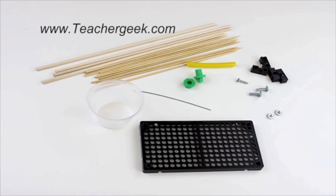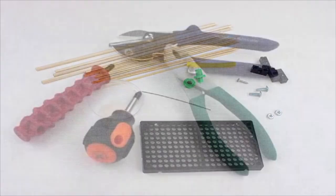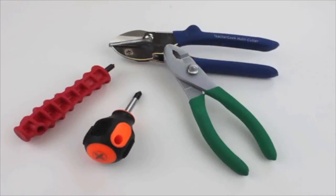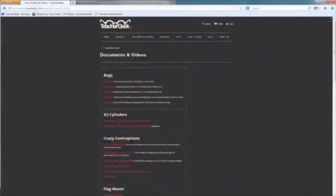A list of the parts needed can be found on the wind lift build guide at teachergeek.com under documents. For this kit you will need a TeacherGeek multicutter, a TeacherGeek reamer, a number two Phillips head screwdriver, and a pair of pliers. Components and free documents for this activity are available at teachergeek.com.